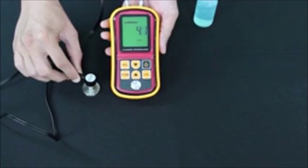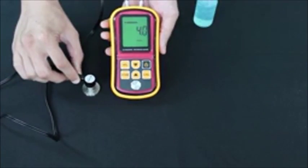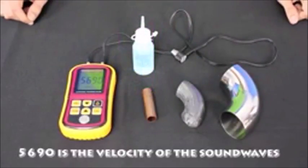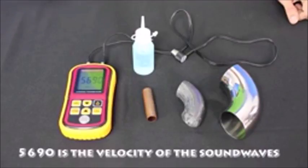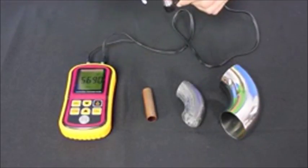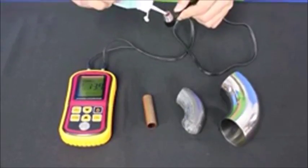Next thing you want to do is get your calibration chip and put the sensor head on the chip. This chip measures 4mm thick, so once the calibration tool reads 4mm we know that we have calibrated the thickness gauge.